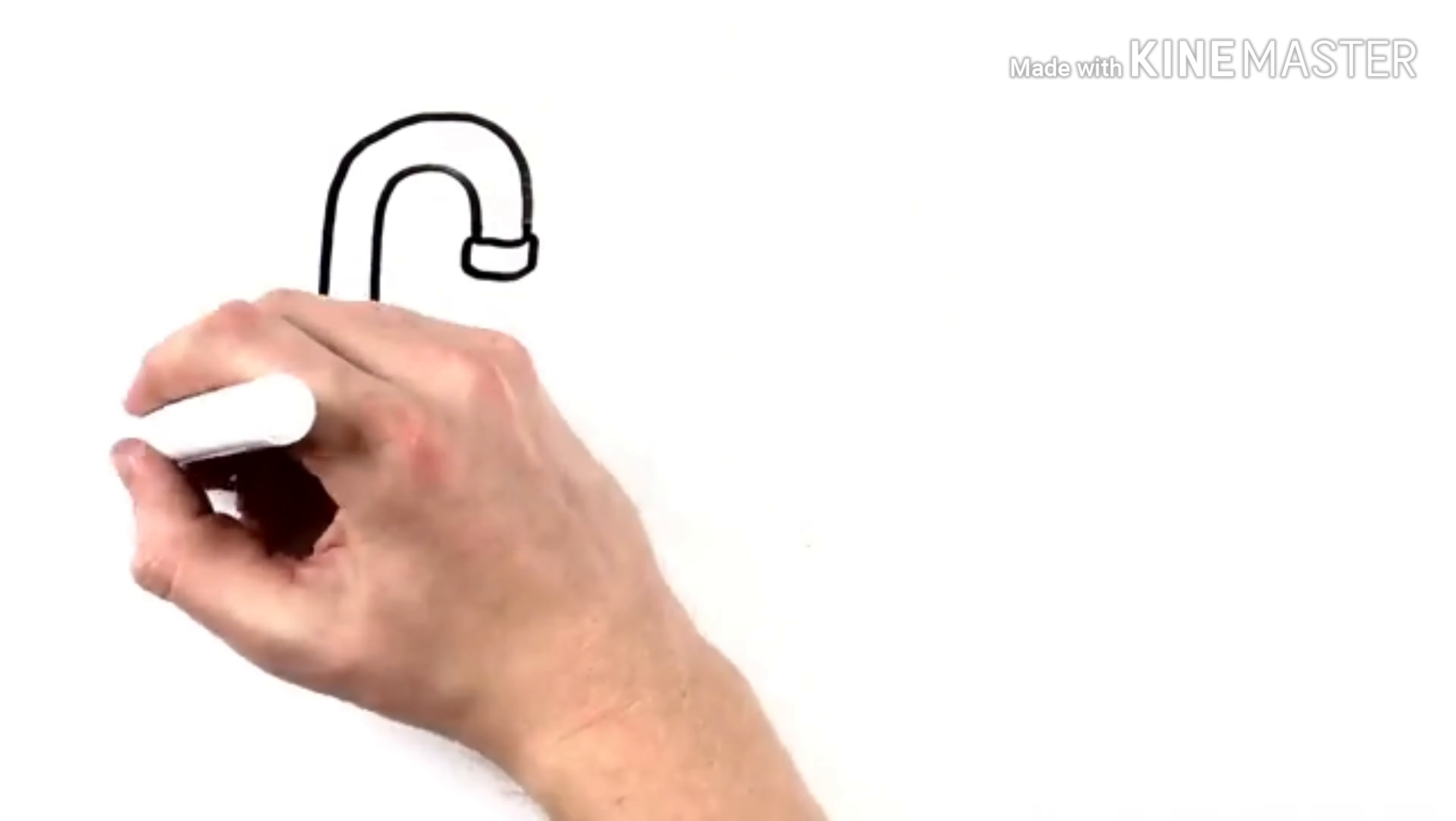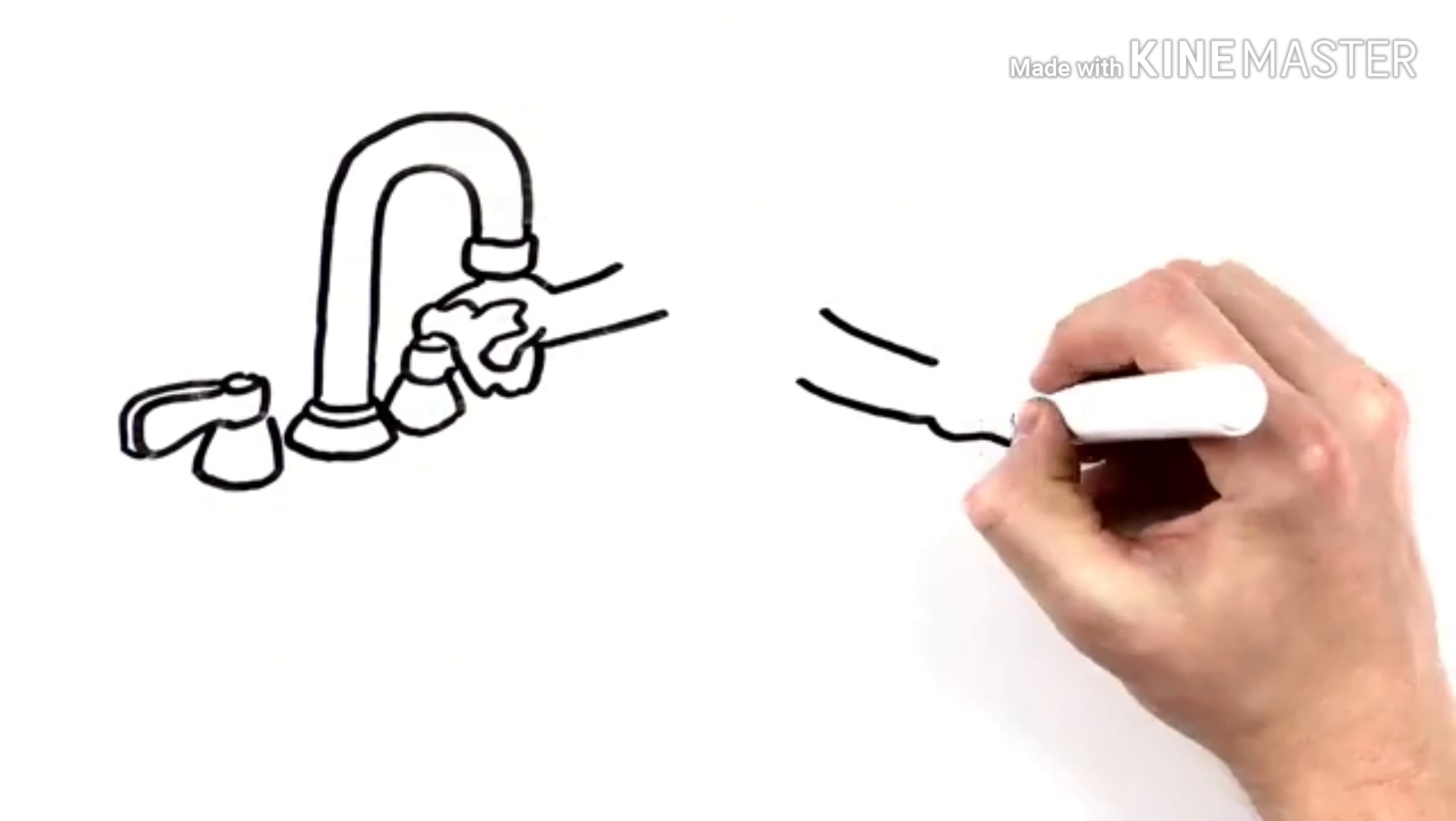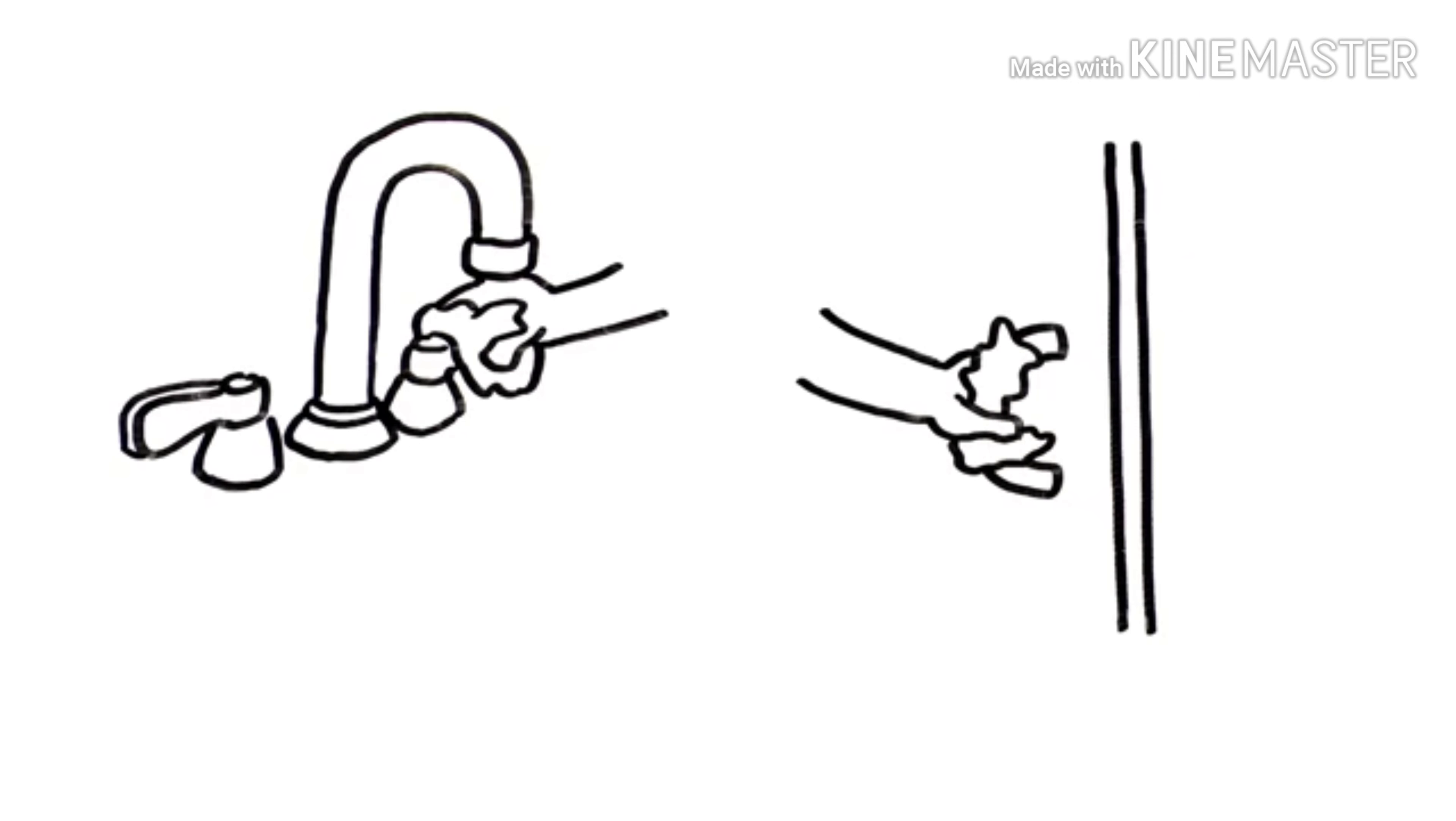Once your hands are clean, use a paper towel to turn off the faucet and to open the restroom doors so you don't contaminate them again.